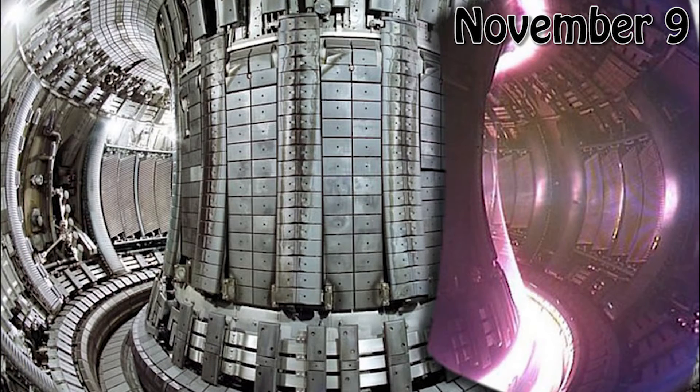A tokamak is a device that produces controlled thermonuclear fusion power which uses a powerful magnetic field to confine a hot plasma in the shape of a torus. The magnetic field was provided by a series of 32 copper wounded magnets ringing the vacuum chamber.